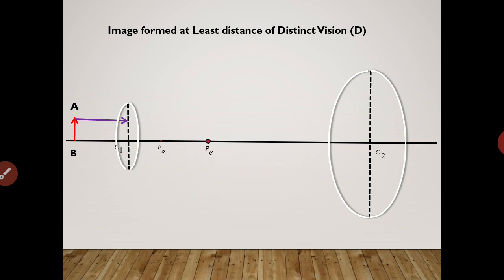The ray parallel to the principal axis, after refraction through the lens, passes through the focal point of the lens. The second ray passing through optical center C1 goes undeviated. Where the two rays meet after refraction is the position of image A'B'. This image is real, inverted and magnified.